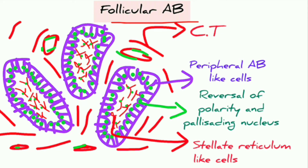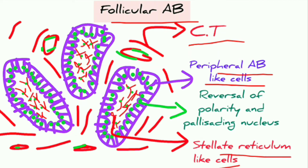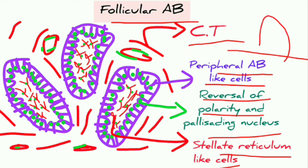In follicular ameloblastoma, islands of tumor are lined by peripheral ameloblast-like cells with stellate reticulum-like cells inside. All nuclei of the basal cell epithelium show reversal of polarity, meaning the nucleus is positioned away from the basement membrane, and palisading arrangement, meaning a parallel arrangement of nuclei within the basement membrane cells.